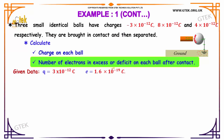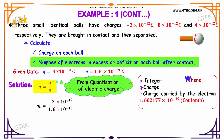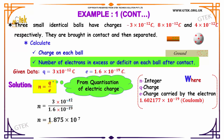Now we need to identify the number of electrons in excess or deficit on each ball after contact. Q is equal to 3 into 10 power minus 12 Coulomb, and e is equal to 1.6 into 10 power minus 19 Coulomb. Using N = Q / e, substituting: 3 into 10 power minus 12 divided by 1.6 into 10 power minus 19, we get N = 1.875 into 10 power 7 electrons.